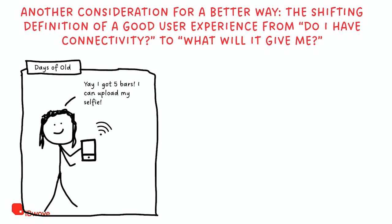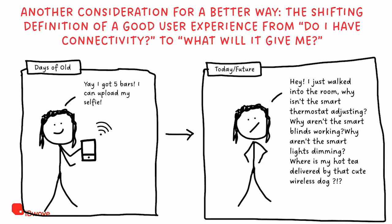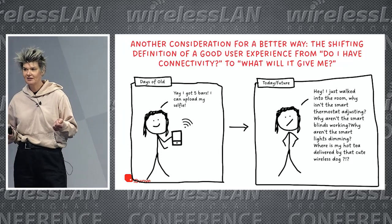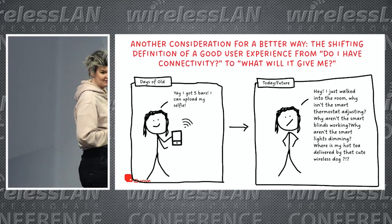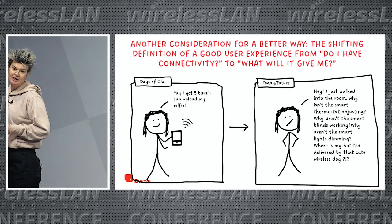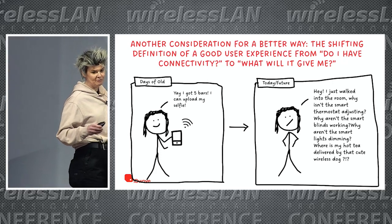Another consideration is the shifting definition of what a good user experience is going to be. We're moving from 'do I have connectivity' — being happy if we can upload a selfie or video — towards 'what is connectivity going to give me.' When you think about the buildings being constructed and all the IoT, they're becoming smart buildings in a smart city. That end user experience is shifting towards: I just walked into a room, why isn't the heating adjusting, why aren't the lights the way I like them, and where's that wireless robot with my espresso?